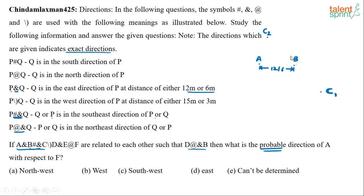Moving on: C whatever D. The 'whatever' symbol means the second person is in the west direction of the first. So D is in the west direction of C, at a distance of either 15 or 3 meters. With varying distances — 12, 6, 15, or 3 — and unknown separations between B and C, there are multiple possibilities for where D falls.